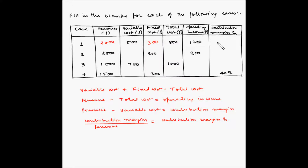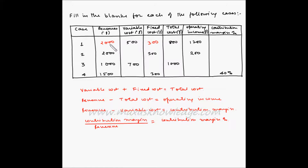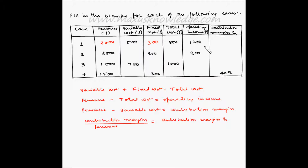Now for the contribution margin percentage: contribution margin is revenue minus variable cost, so 2000 minus 500 equals 1500. Then contribution margin percentage is 1500 divided by 2000, which is 0.75. Multiplied by 100, the contribution margin percentage is 75 percent.